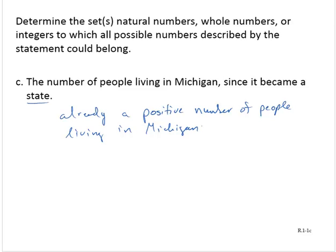So if we think about which sets contain the positive numbers of people, then all three of the sets include those. So it could be natural. So the natural numbers include that. The whole numbers include them, as do the integers.